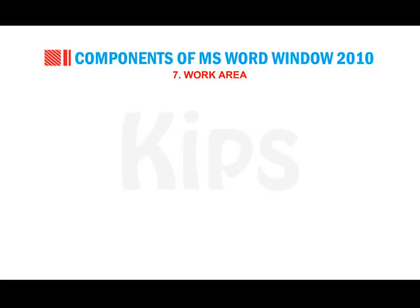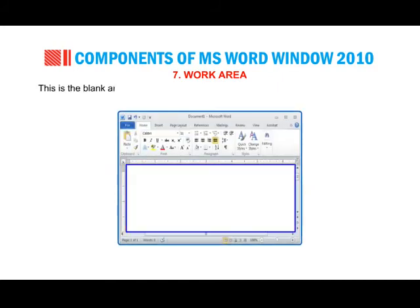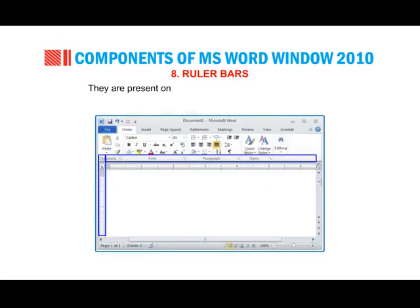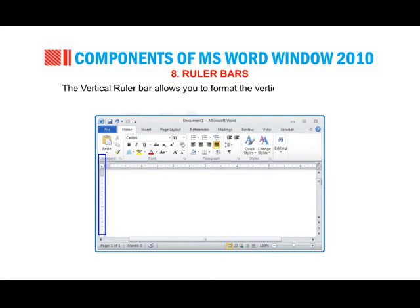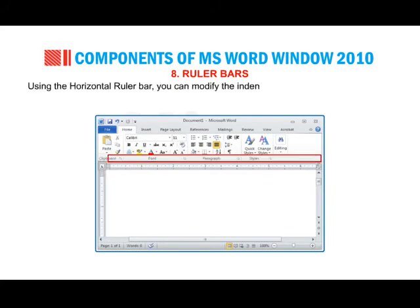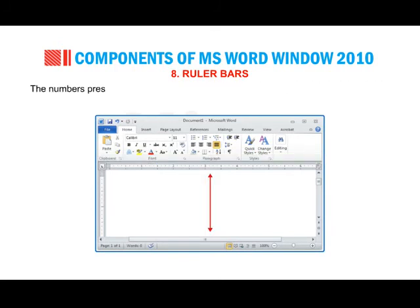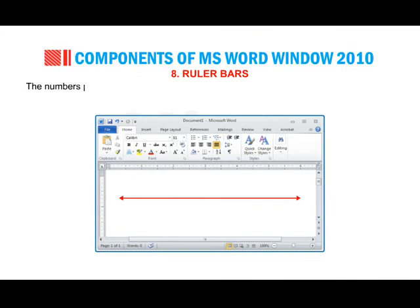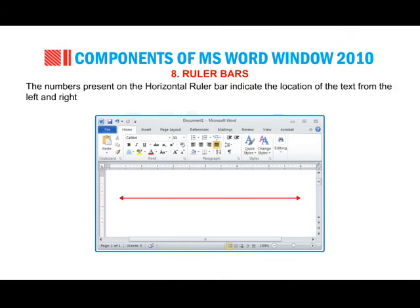Work Area: this is the blank area and the document window where you can type, edit and format the text. Ruler Bars: they are present on both the top and left side of the document. The vertical ruler bar allows you to format the vertical alignment of text. Using the horizontal ruler bar, you can modify the indents, margins, tab stops and page measurements. The numbers on the ruler bars indicate the position of text on the page.